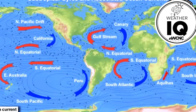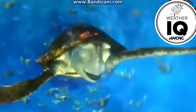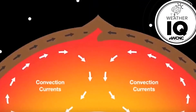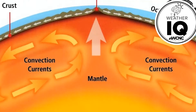Moving to our oceans, the same thing happens: warmer water is replaced by colder water, creating currents across the Earth. Some animals even cruise along these currents to get from place to place. Another example right beneath our feet — under the earth's crust — is what's called the mantle.